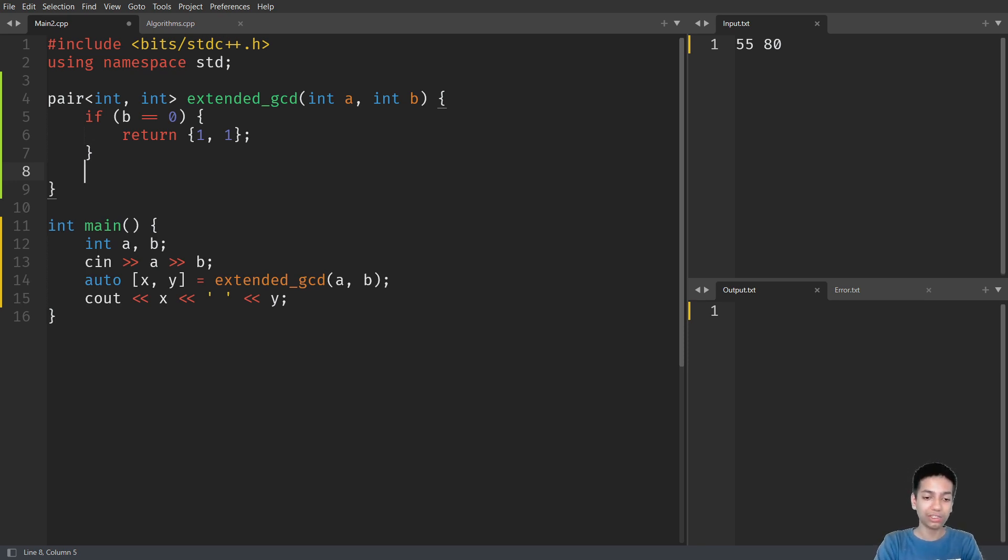Then we will store the result of the recursion, that is X2 and Y2, by calling this function. This is a recursion and here I will call it for B and A modulo B.